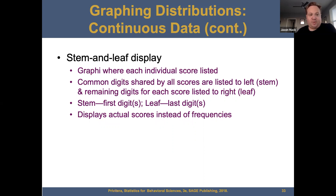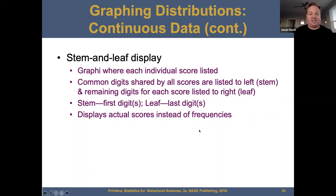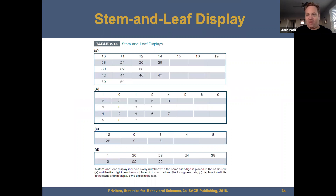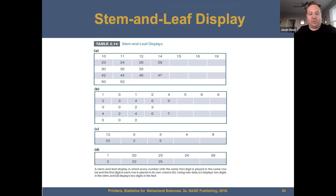You also have a stem-and-leaf display. This is a graph where each individual score is listed. Common digits shared by all scores are placed to the left — that's your stem. The remaining digits for each score are listed to the right — that's your leaf. The stem is the first digits and the leaf is the last digits. This displays actual scores instead of frequencies. A stem-and-leaf display places every number with the same first digit in the same row, with the first digit of each row in its own column.